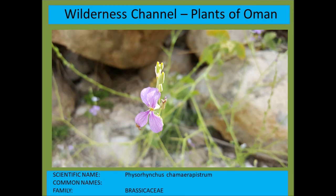Physorrhynchus cheiranthos is a very delicate kind of plant that typically grows in Oman — from the mustard family.